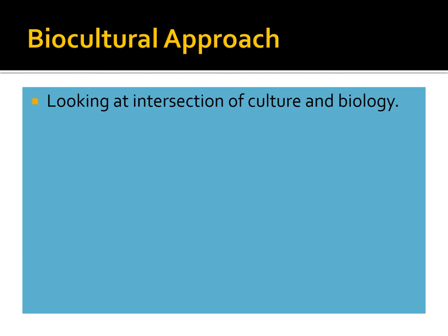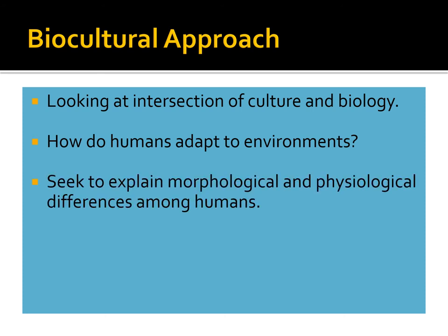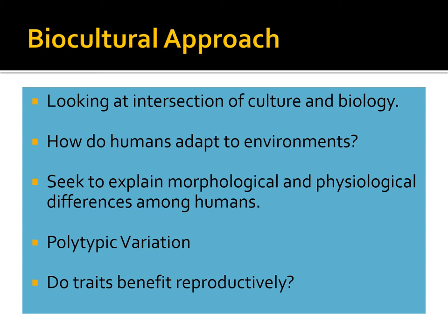In anthropology, we call this the biocultural approach — looking at the intersection of culture and biology. How does culture affect biology and vice versa? How do humans adapt to various environments? We essentially seek to explain morphological and physiological differences among humans. Why do humans, as members of a single species, look so different on the outside? Every emperor penguin, even though they're far more genetically variable than humans, all look the same. But for humans, we have all sorts of differences in size and outward appearance.